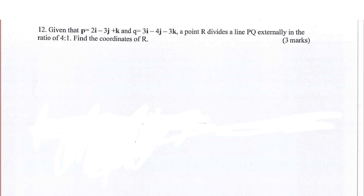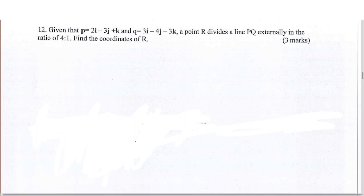Hello and welcome. Let us work with this question on external division of a line. Given that P equals 2i minus 3j plus k and Q equals 3i minus 4j minus 3k, a point R divides the line PQ externally in the ratio 4 is to 1.